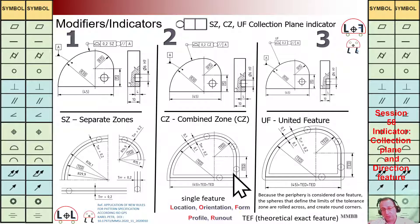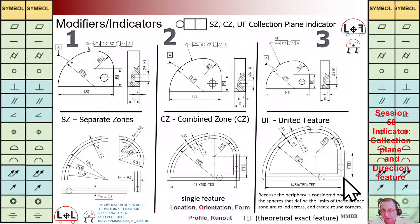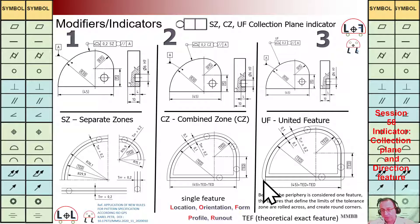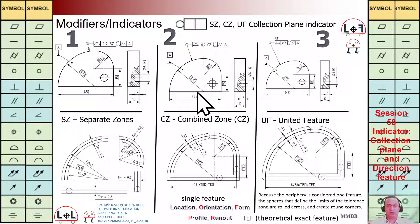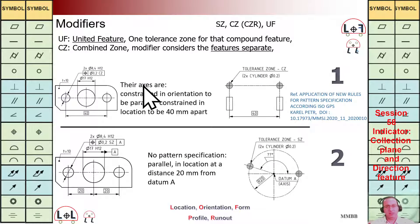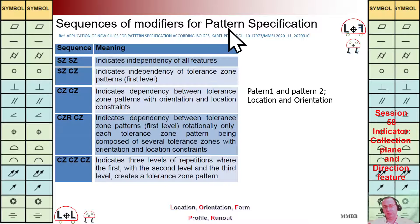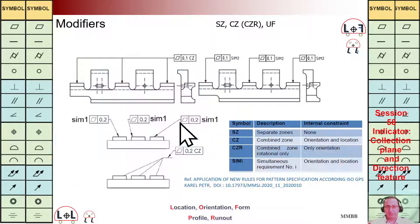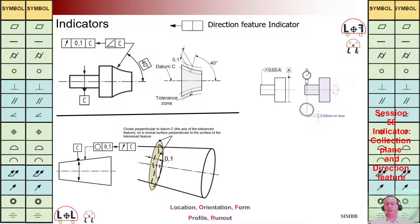In combined zone, each feature is combined but each of them has this TZ — the TZ is not going to roll. But in the united feature, the TZ is going to roll around, that's why we get round corners. For now I would like to close this session. In the coming session I'm going to talk about the S-set and CZ and also the sequence of these modifiers. Thank you for today, I hope you enjoyed it.